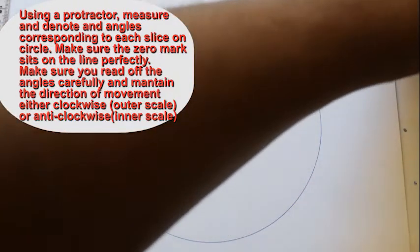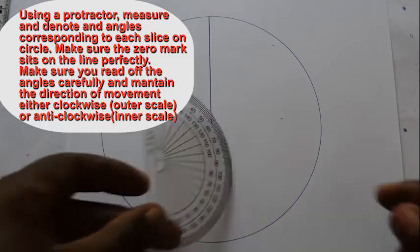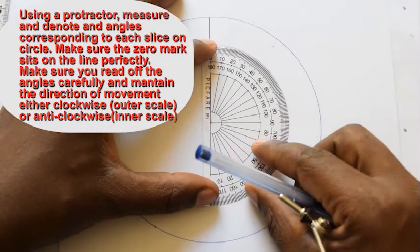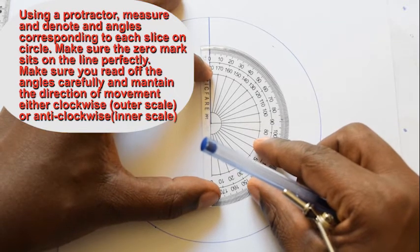Using a protractor, measure and denote the angles corresponding to each slice on the circle.